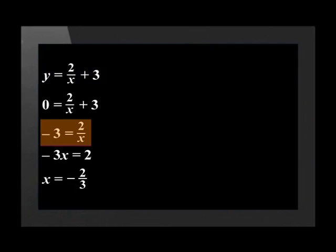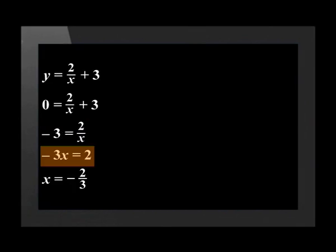Negative 3 is equal to 2 over x. Negative 3x is equal to 2, which means that x is equal to negative 2 over 3. I hope you can see why we are doing this.